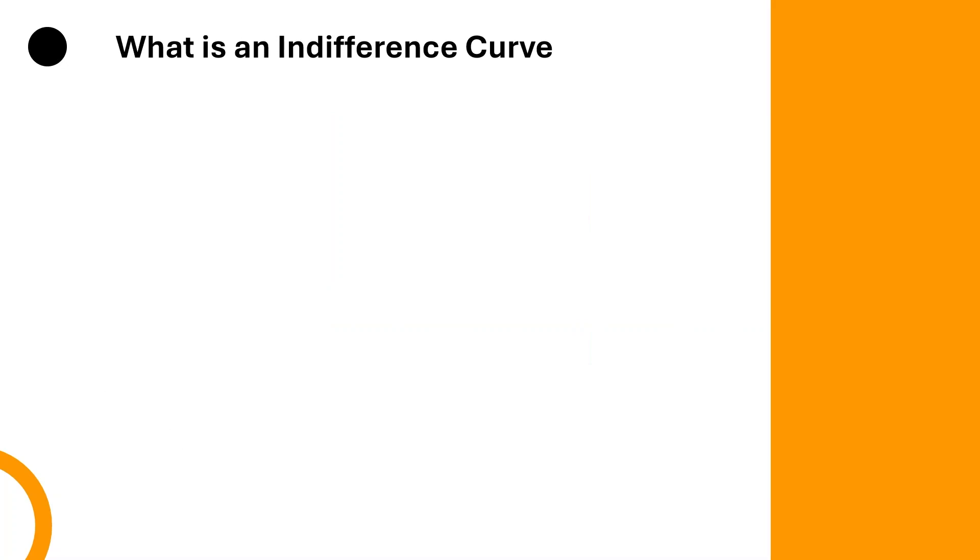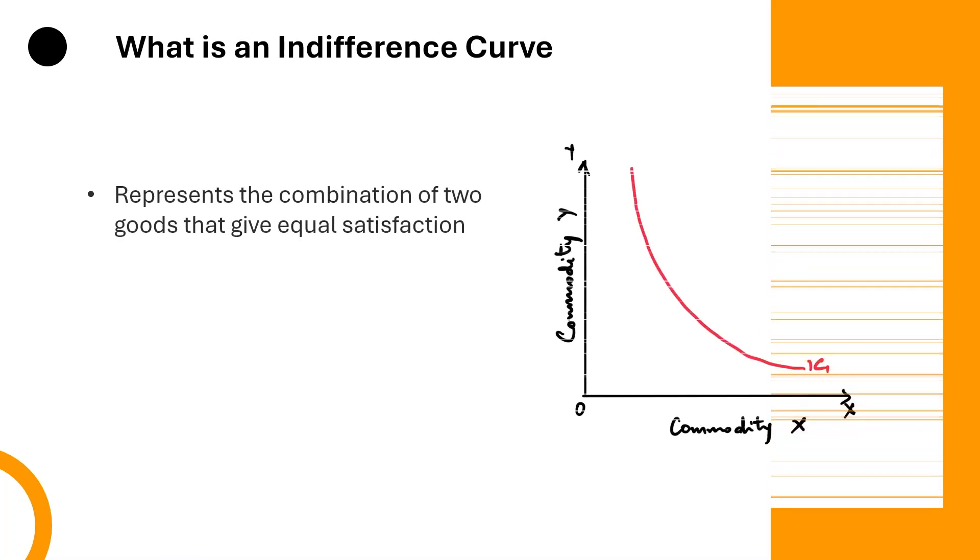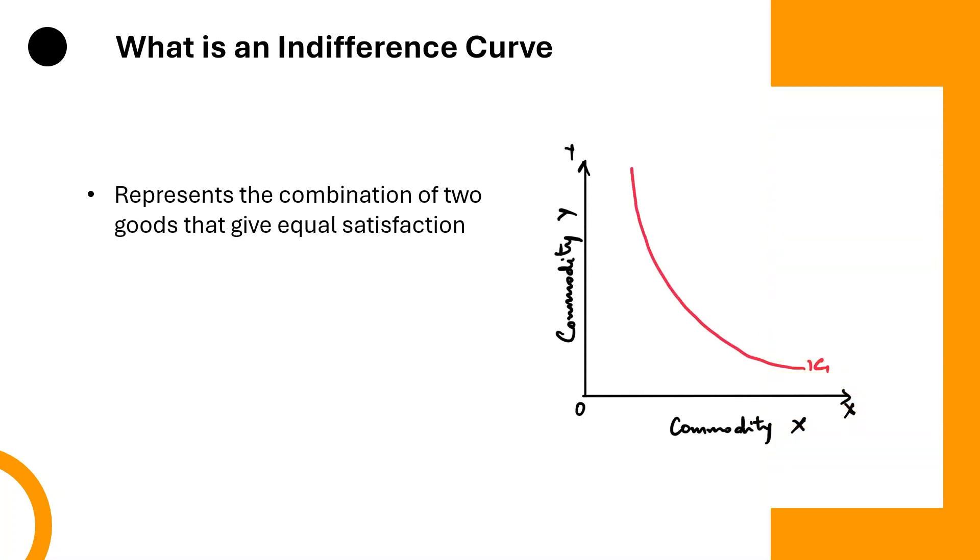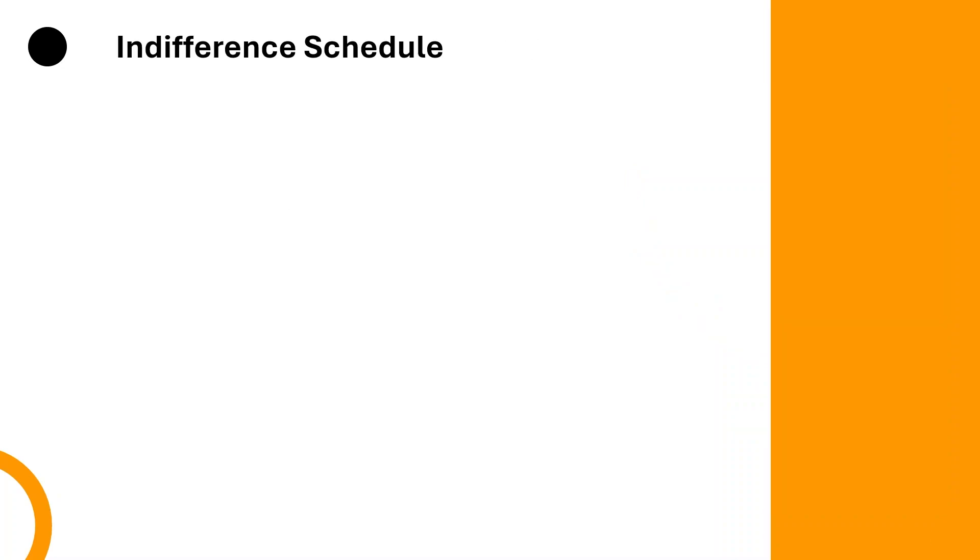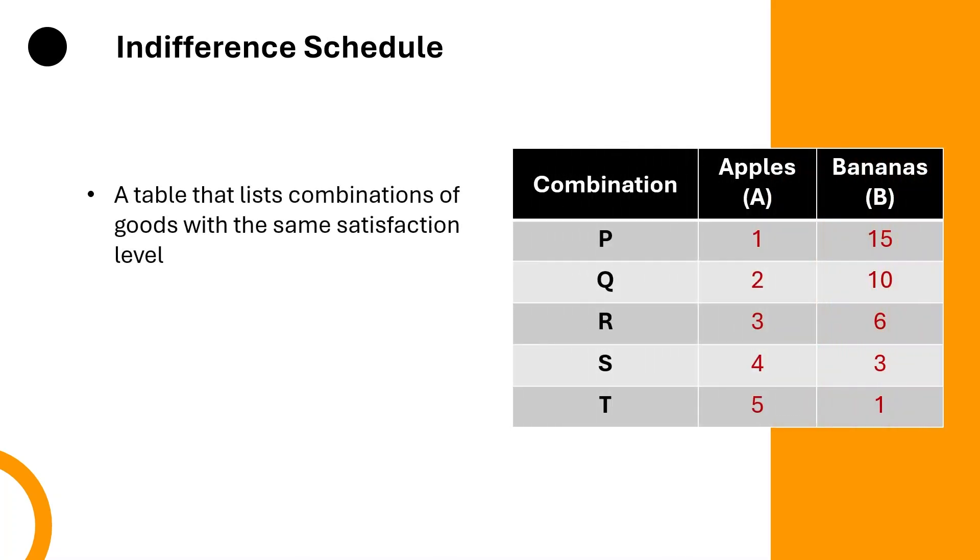Let us define an indifference curve. An indifference curve refers to the graphical representation of various alternative combinations of two goods that provide the same level of utility or satisfaction to a consumer. The consumer is equally happy with any combination on the curve. Before drawing the curve, economists often use an indifference schedule, which is a table showing different combinations of two goods that offer the same utility. This table serves as a guide to plot indifference curves.